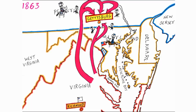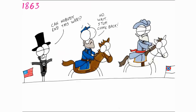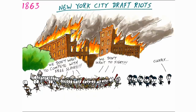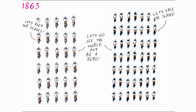As General Lee made another push into the North, Major General George Meade took charge of the Union forces and they fought for three days in July at the Battle of Gettysburg, the bloodiest battle of the war, with huge losses on both sides. Lee retreated, but Meade was not able to capture their forces. This battle was the turning point of the war, as the Confederacy threat was never as great again. The draft laws in the North weren't popular and riots broke out in New York, and many soldiers deserted too.